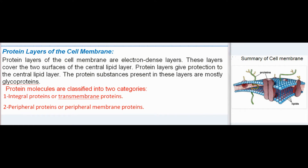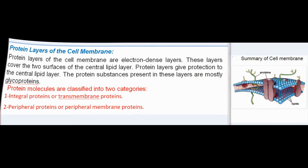The protein layers of the cell membrane are electron-dense layers that cover the two surfaces of the central lipid layer and give protection to it. The protein substances present in these layers are mostly glycoproteins. Protein molecules are classified into two categories: integral proteins (or transmembrane proteins) and peripheral proteins (or peripheral membrane proteins).